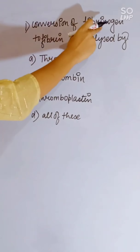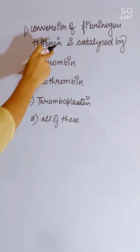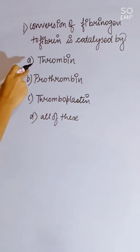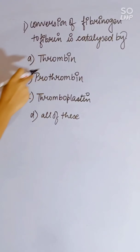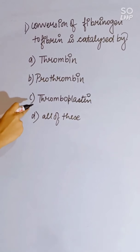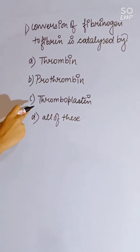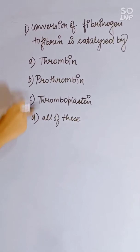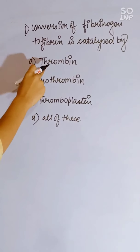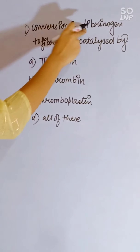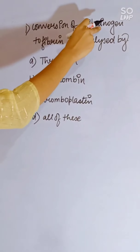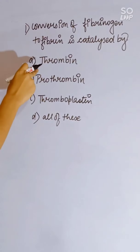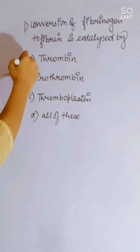Conversion of fibrinogen to fibrin is catalyzed by: thrombin, prothrombin, thromboplastin, or all of these. Thrombin helps in the conversion of fibrinogen to fibrin. Correct answer is thrombin.